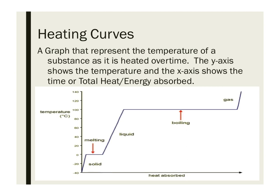Heating curves are graphs that represent the temperature of a substance as it is heated over time. We always get the same setup: the y-axis shows the temperature, and the x-axis shows either time or the total heat or total energy that is absorbed or released if we're going in the other direction and cooling a substance. There are a couple parts to these heating curves: three diagonal lines and two horizontal lines.